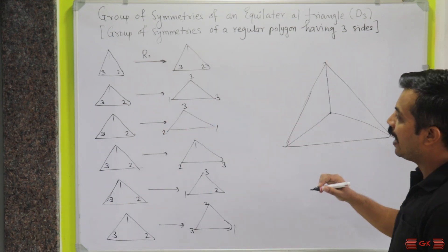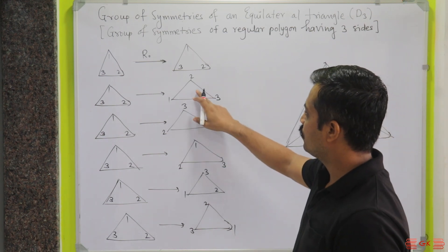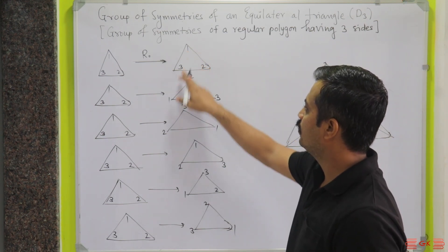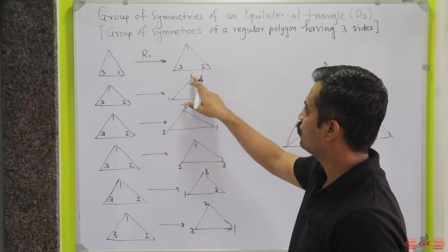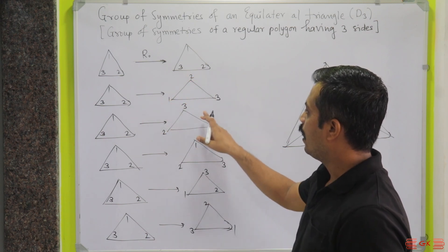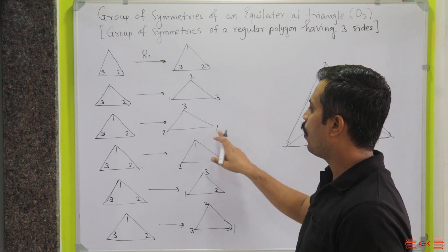As you can see, this is the first rotation. First of all, one was here, now it appears here: one, two, three. Again, one more time you have rotated: one, two, three.